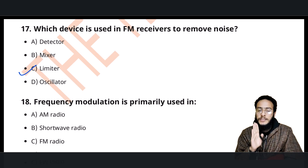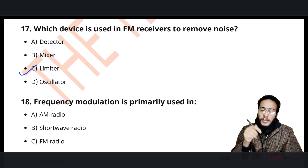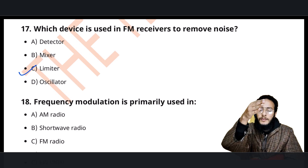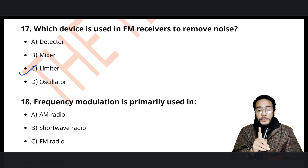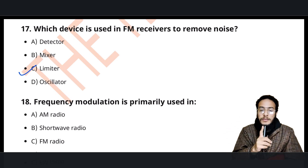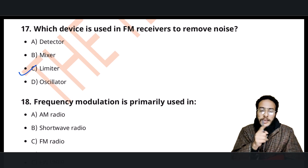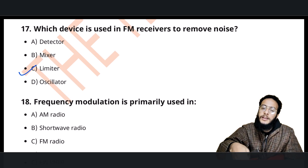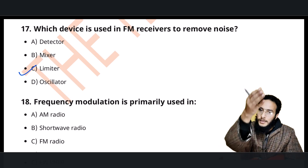When generating higher frequencies: the oscillator cannot directly generate very high frequencies due to frequency stability issues. So to get higher frequencies, a frequency multiplier is used to multiply and apply the frequency.